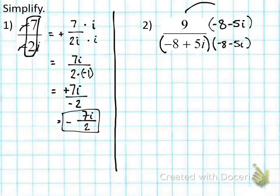So now we're multiplying. We've got 9 times -8 is -72. We have 9 times -5 is -45i. And the denominator now, we have -8 times -8 is positive 64. -8 times -5i is +40i.